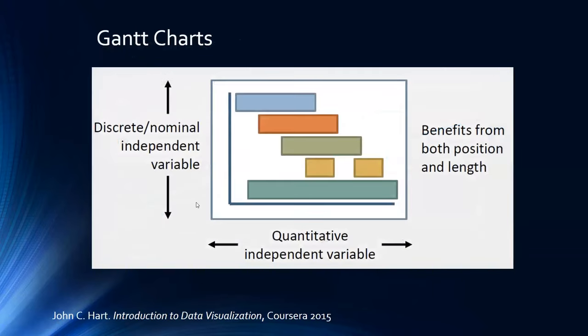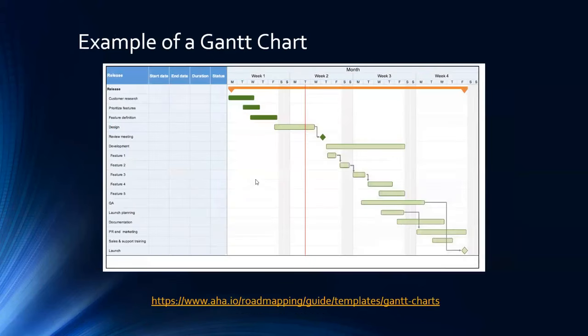Gantt charts can show the change in a dependent variable with the increase of an independent variable. Gantt charts can be useful because it allows the creator to exhibit differences from both position and length. This kind of chart can be used specifically when dealing with a multi-phase project where the audience wants to know how long a phase of the project lasted. In this example of a Gantt chart, we can see the number of days each phase took and how long it took to complete the entire project.